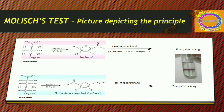Here is a picture depicting the principle. Both pentose and hexose are shown. The addition of H2SO4 causes removal of three water molecules from pentose, leading to the formation of furfural. For hexose, the product is 5-hydroxymethyl furfural, depending on the additional groups present. Pentose gives furfural while hexose gives 5-hydroxymethyl furfural.